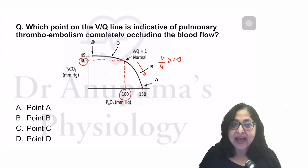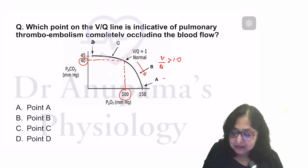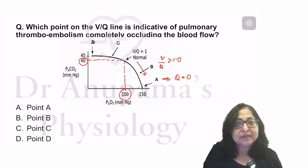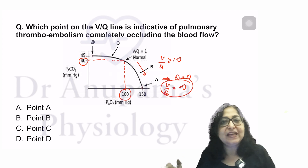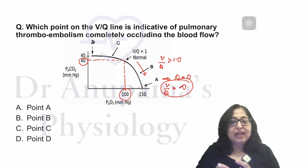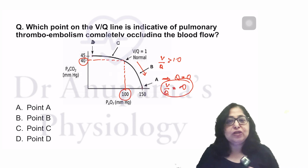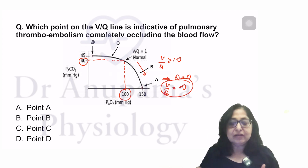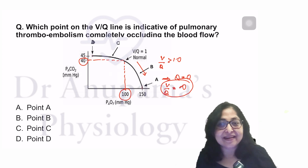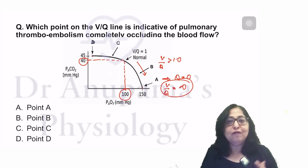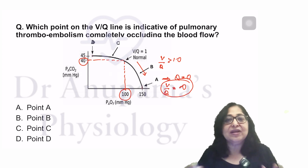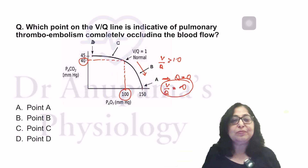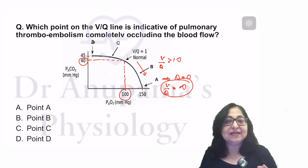At point A, perfusion is zero. If perfusion is zero, the VQ ratio equals infinity — anything divided by zero gives infinity. When perfusion is zero, the composition of the alveolar air will be similar to dead space air. Dead space is the volume of air which does not participate in respiratory exchange. So if perfusion is zero, there is no respiratory exchange, and alveolar partial pressures of oxygen and CO2 will mirror dead space air.